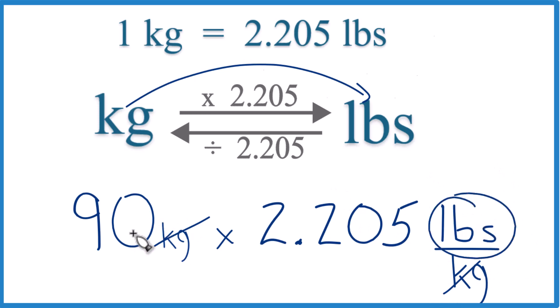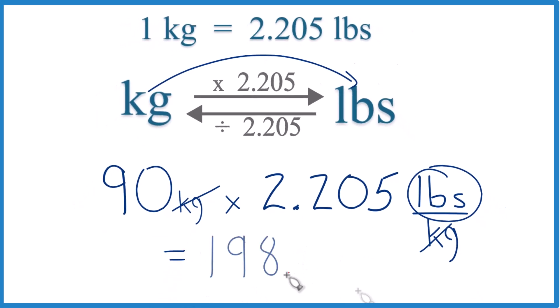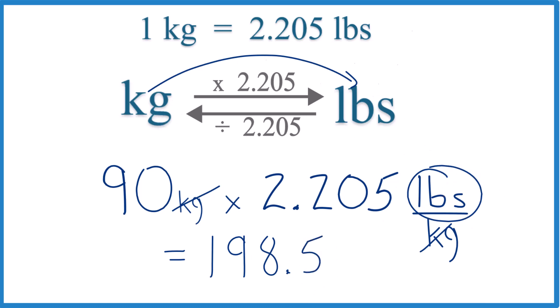So we're just taking 90 times 2.205 pounds. When we do that, we end up with 198.45 — I'm going to call it 198.5. And the units are pounds. We went from kilograms to pounds, so 198.5 pounds.